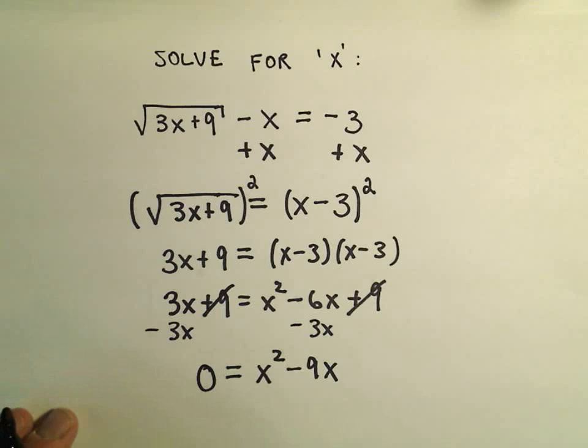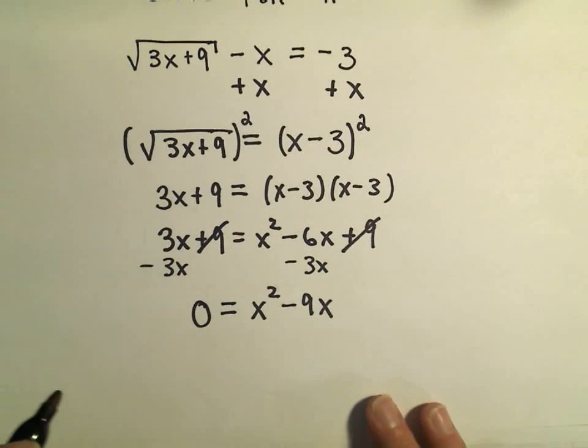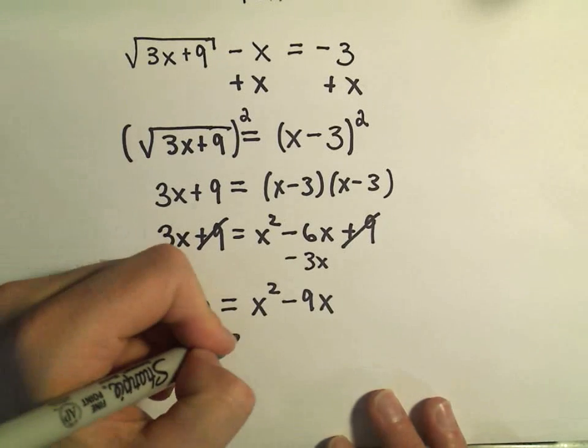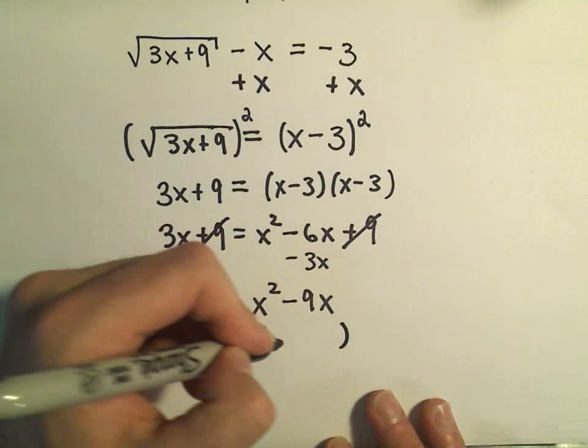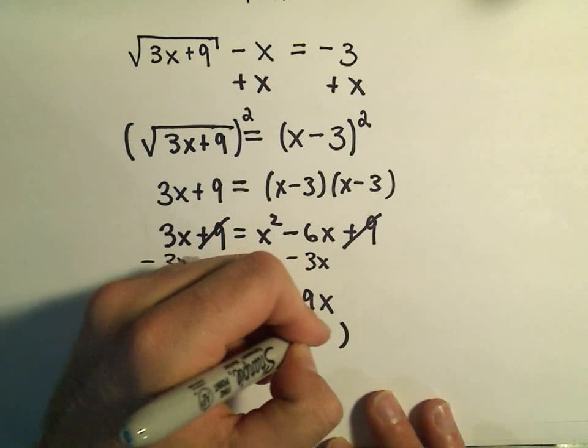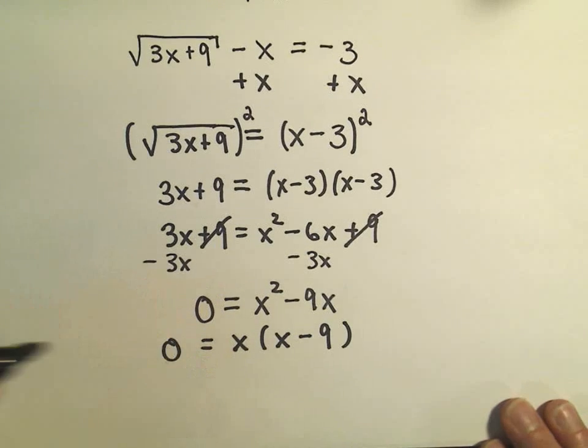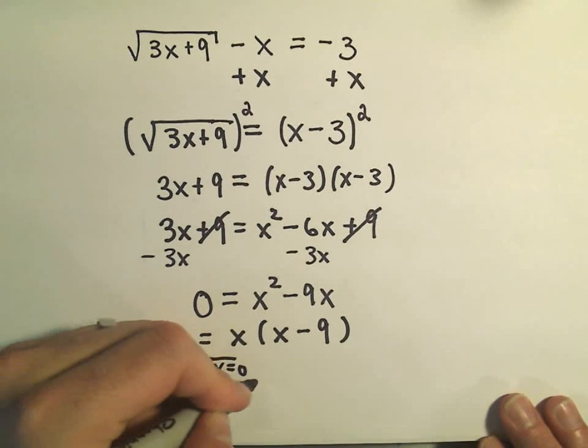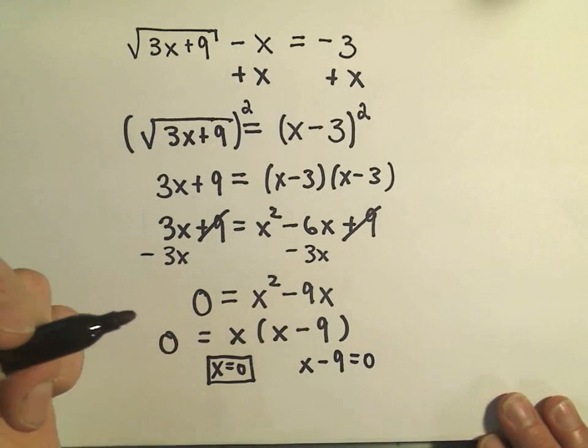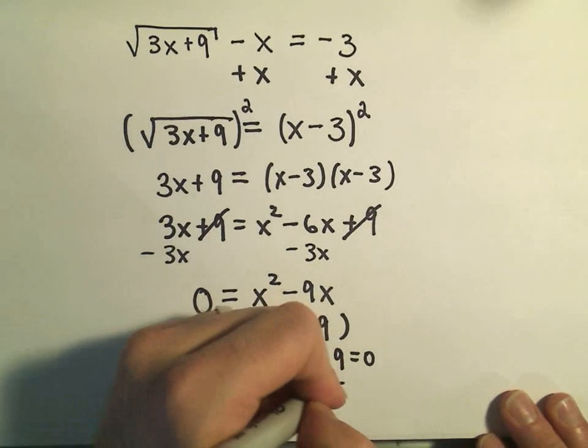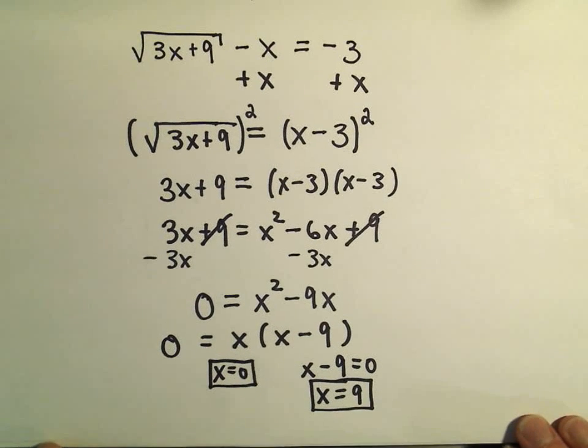And again I like the quadratic equations where there's no constant because basically all you have to do in this case is we have to factor out the x and then in parentheses we would have x minus 9 left over. If we set the first factor equal to 0 we'll simply get x equals 0 as a solution. If we set x minus 9 equal to 0 we can add 9 to both sides and then simply get x equals positive 9 as our other solution.